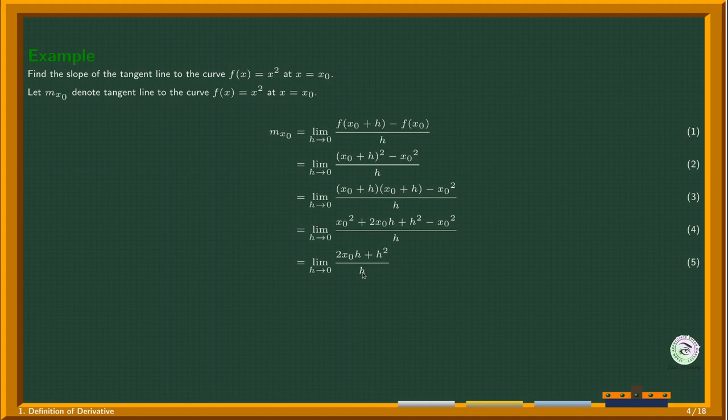When I pull out the common h and cancel it, the denominator becomes one—I don't have to write it. I put one x₀ out and one h out, so this becomes 2x₀. There are two h's; I took only one out, so this is just h.